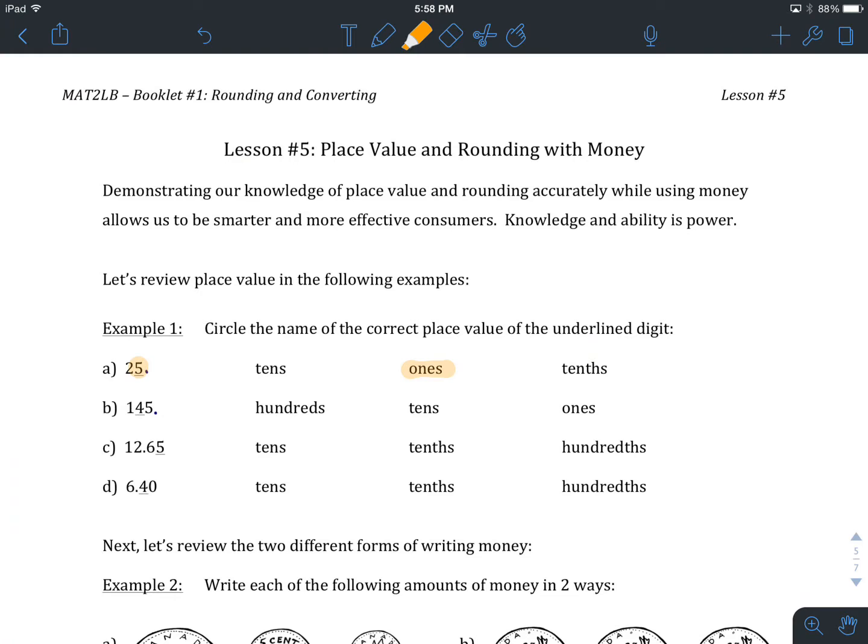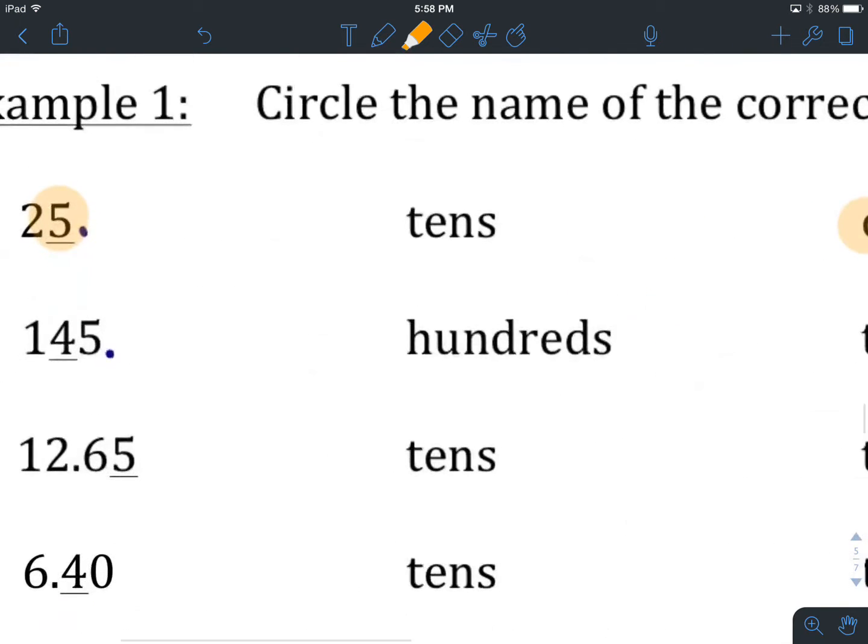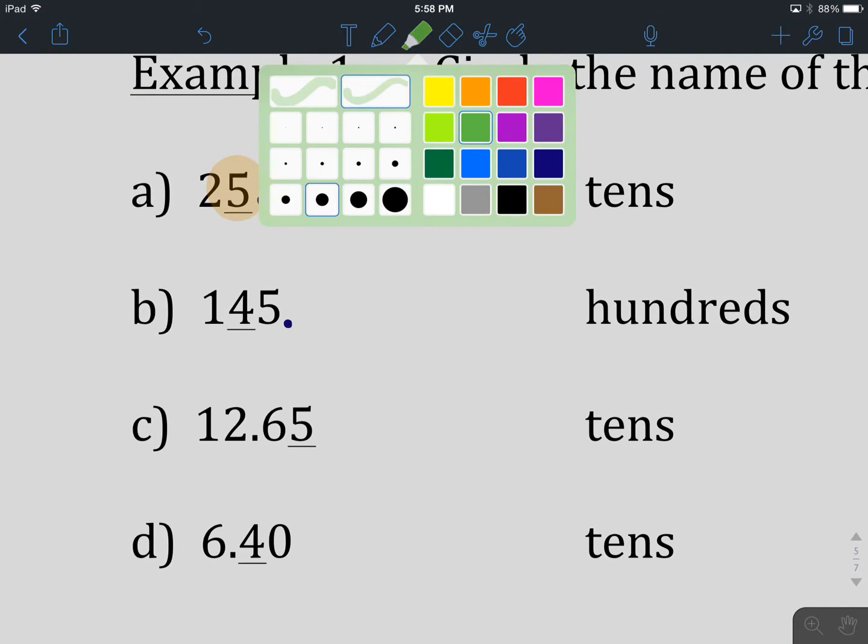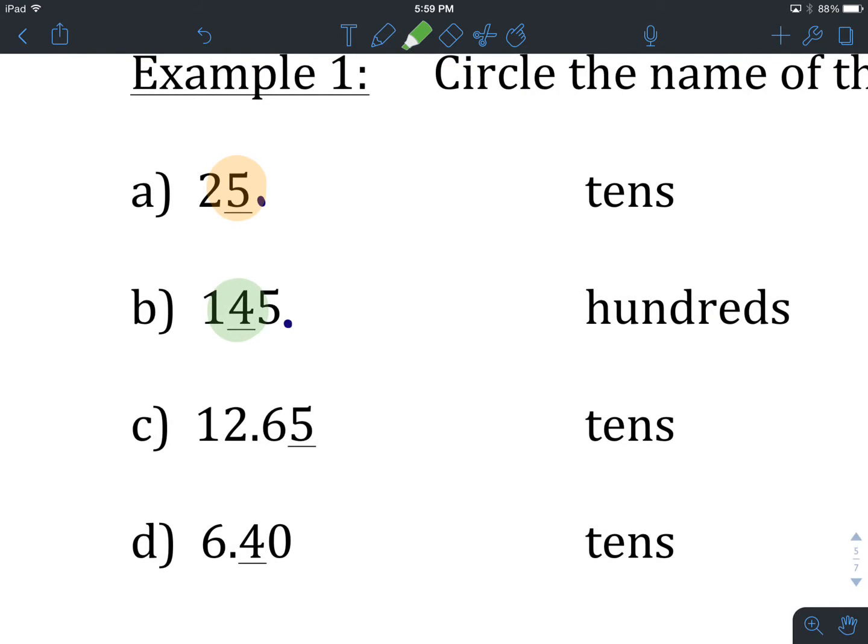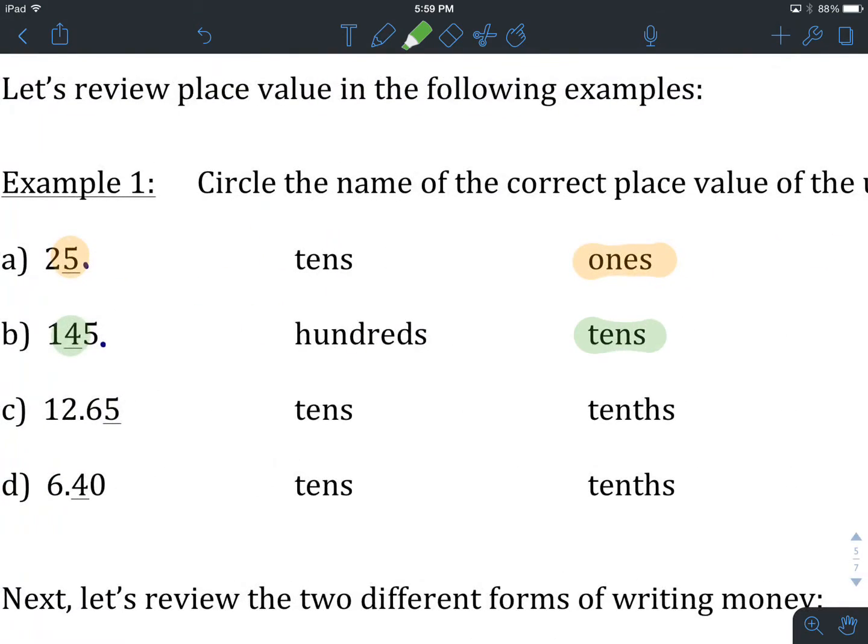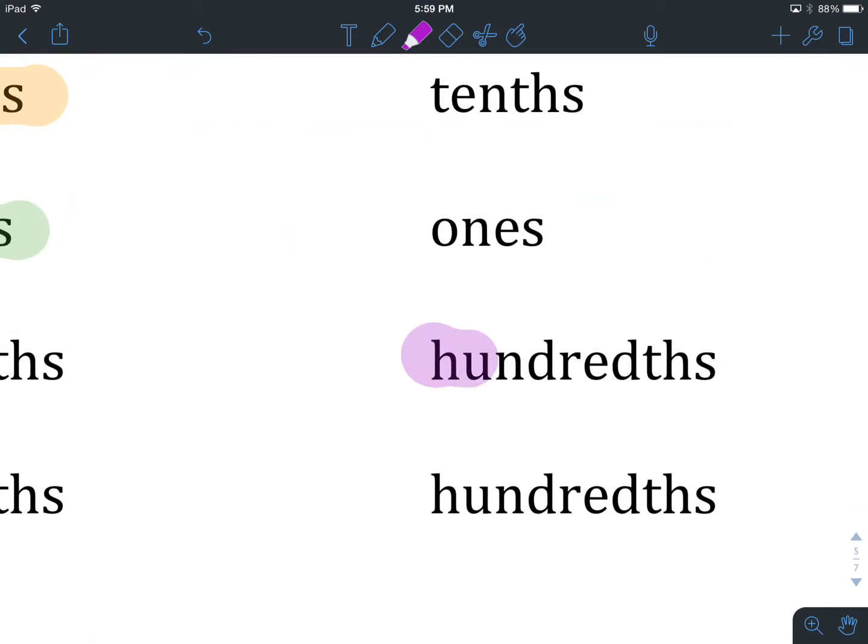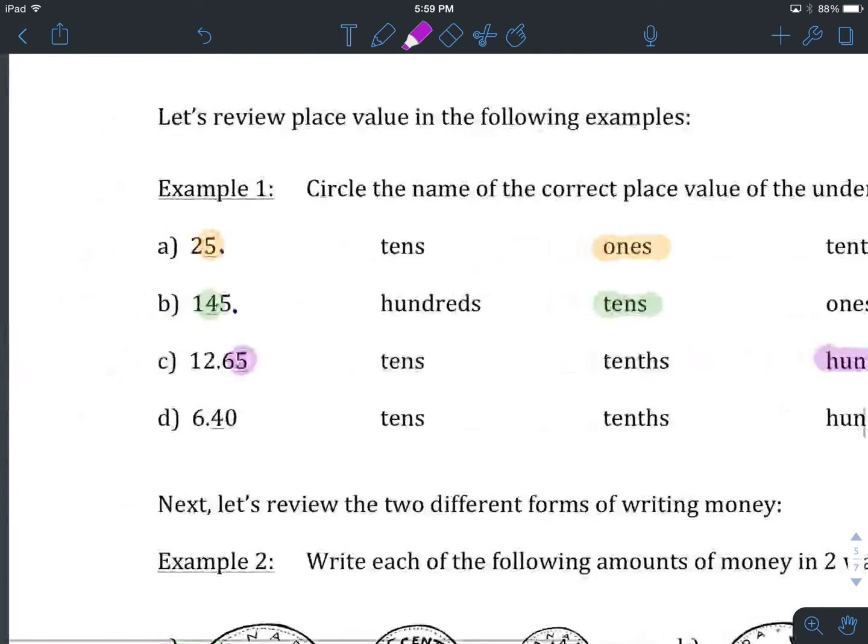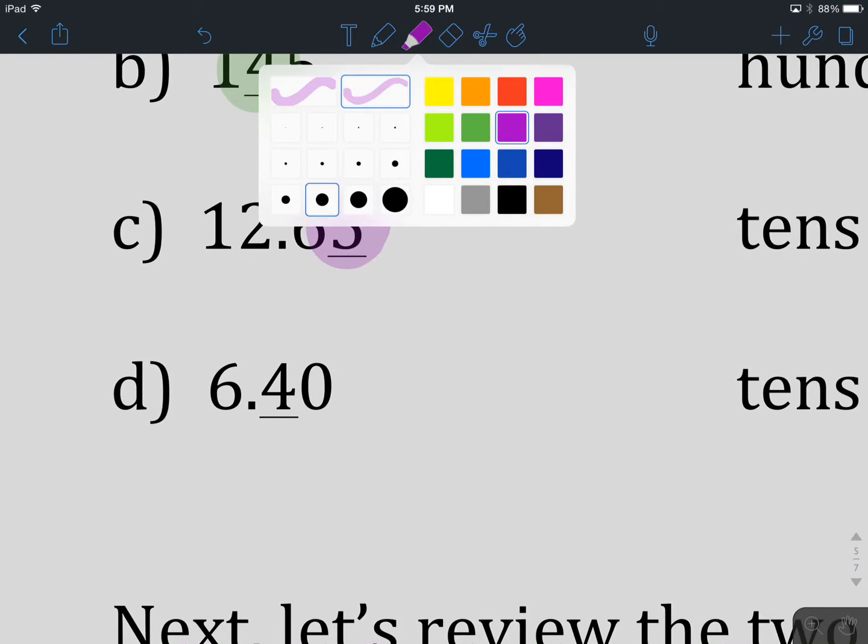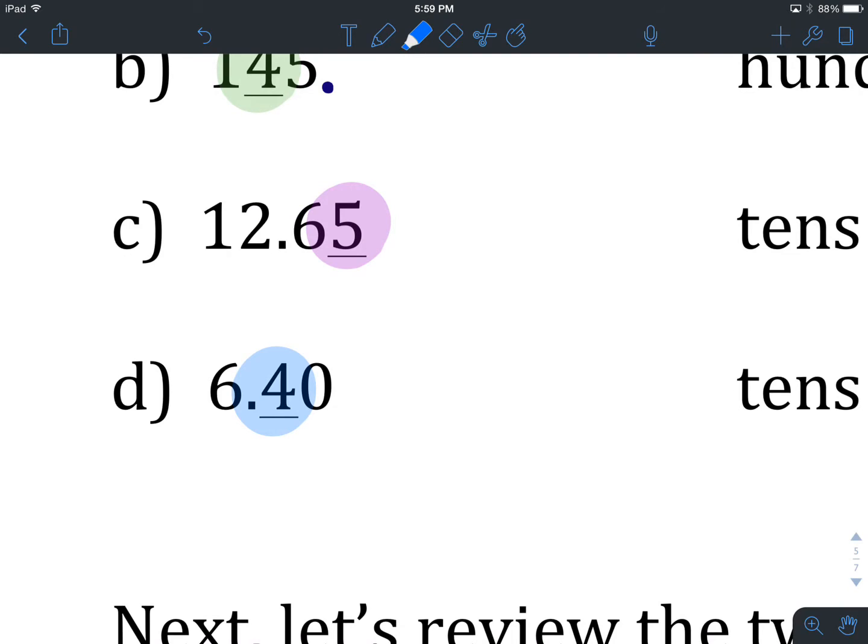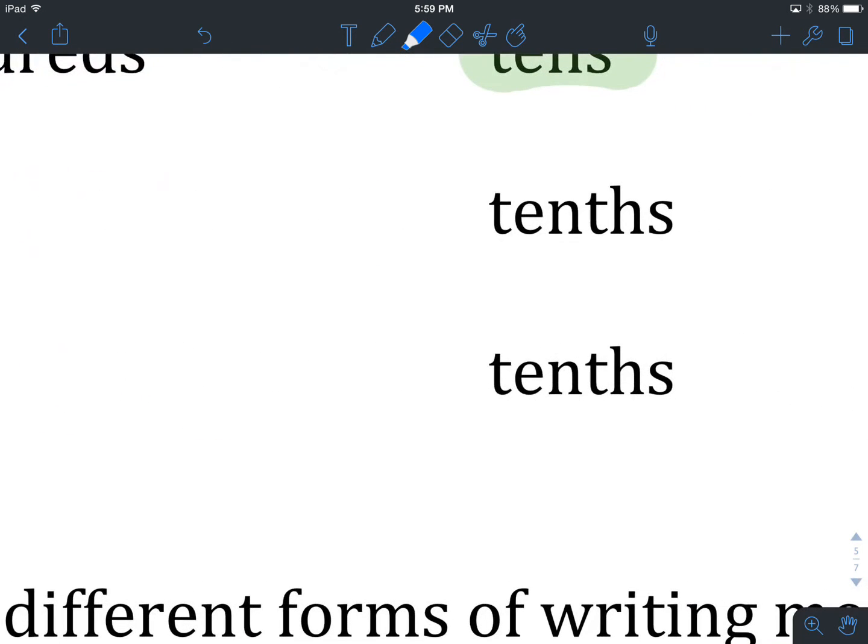Hopefully you've gone ahead with B, C, and D. Let's take a look. We are rounding 145 to the place value two spaces to the left of our decimal point. That is not hundreds, that is tens. For C, we've got 12.65, and the 5 is what's underlined. The 5 is two place values to the right of our decimal place. That is not tens or tenths, but hundredths. Last, we have 6.40. Place value here, one to the right of our decimal place, that is not tens but tenths.